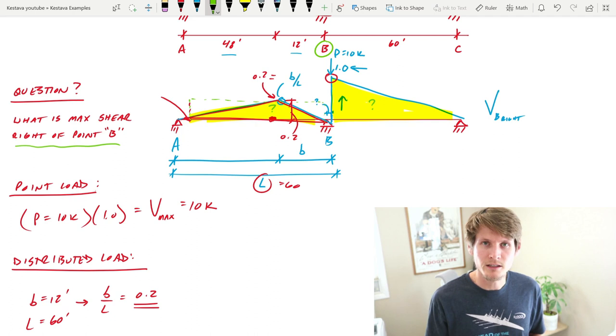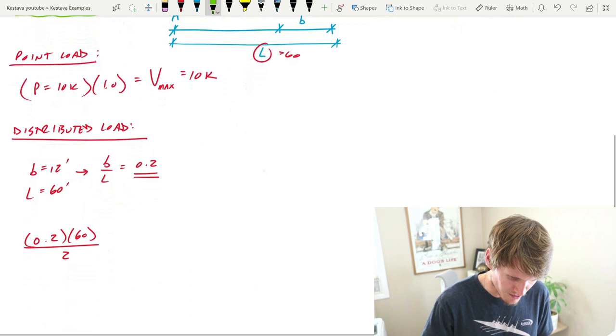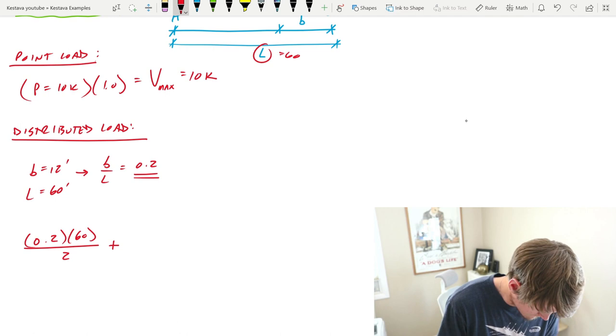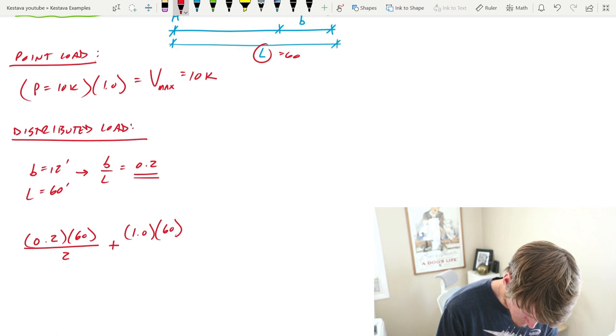That would get you the area of this rectangle, and we know for triangles that if you take half of the rectangle you will get the area of the triangle. So that's why we divided by 2. Now we need the area of the triangle from supports B to C, so we do plus 1.0 for our shear factor times the length of the span, this time it's from B to C, 60 feet, divided by 2.